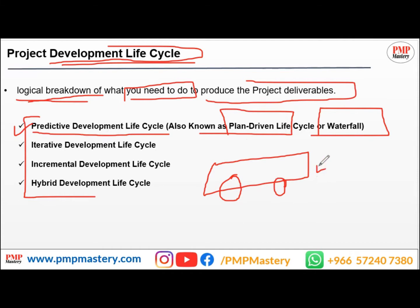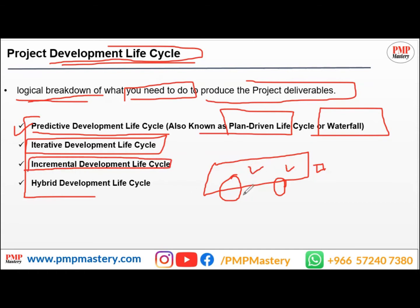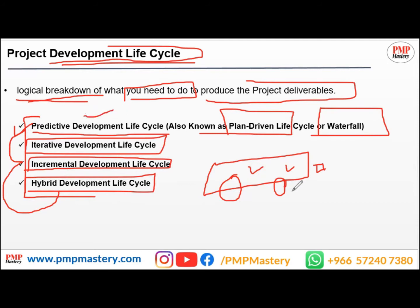You may also use the iterative development life cycle or the incremental development life cycle. And lastly, you can use the hybrid development life cycle, which is a combination of predictive and agile — for example, using predictive for planning and design, and iterative or incremental for testing and execution. The choice depends on how clear and complete your requirements are.